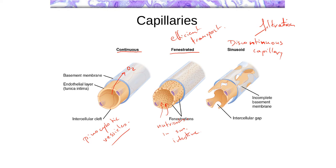In your bone marrow, red blood cells and white blood cells being produced there would enter the bloodstream using these discontinuous capillaries. In your liver, materials within the bloodstream need to come into direct contact with liver cells, so they have to exit the bloodstream. The same goes in the spleen, where cells must exit the bloodstream and come into direct contact with the cells doing the filtration. Depending on the function, you are going to have these different types of capillaries.